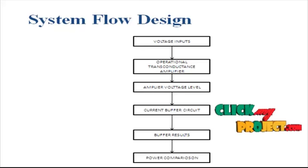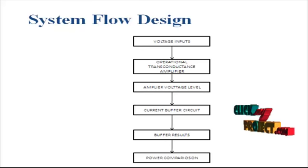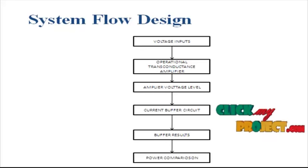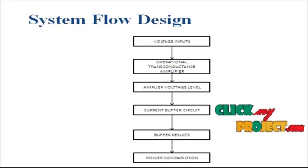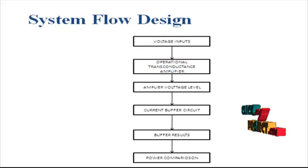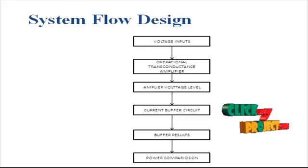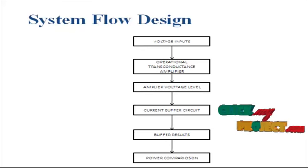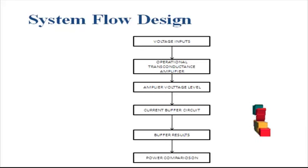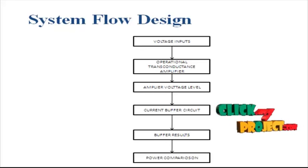The buffer amplifier transfers input to the output side with the same input for time allocation, and is used to calculate the power comparison performance. This power comparison is based on the overall CMOS circuit, including the operational amplifier, the operational transconductance amplifier, and the current buffer circuit. The CMOS is designed to optimize power allocation and to perform amplification, inverting the voltage level input and passing the output to the current buffer circuit.